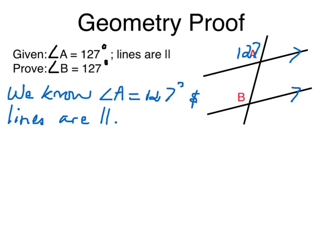That's the parallel symbol. Now I'm going to start saying new information. I know for a fact angle A and angle B are corresponding angles. So I'm going to say angle A and angle B are congruent.